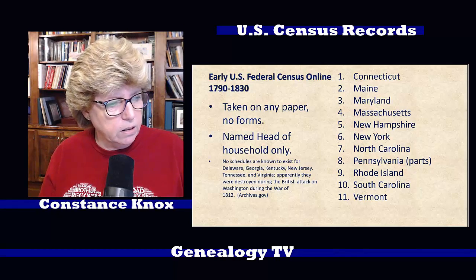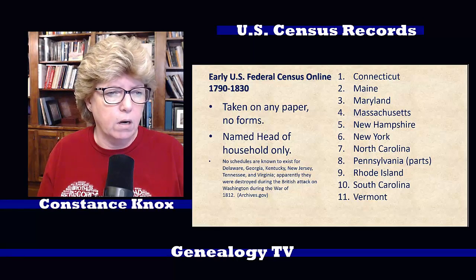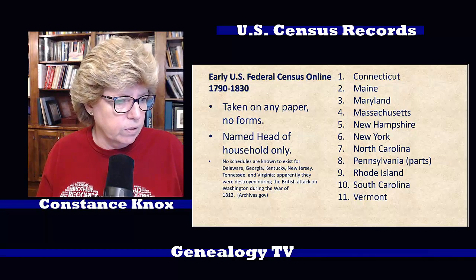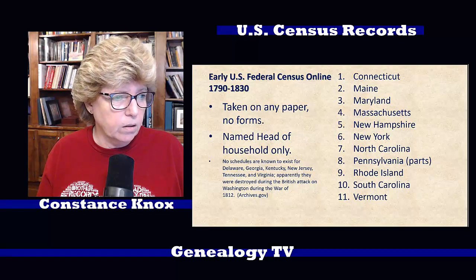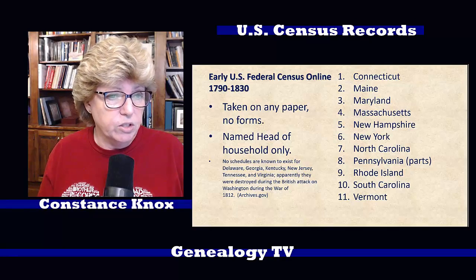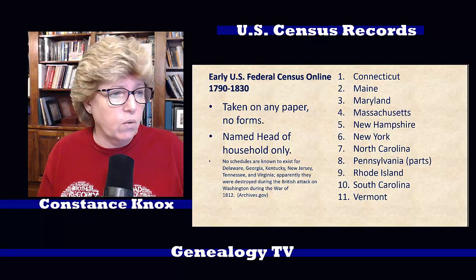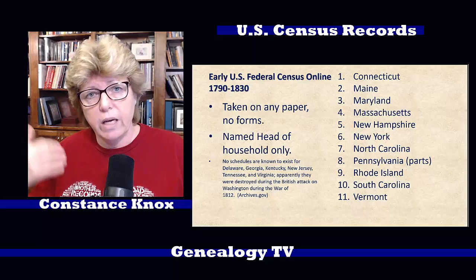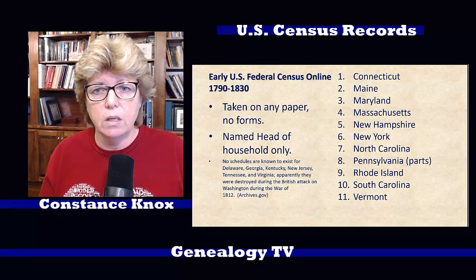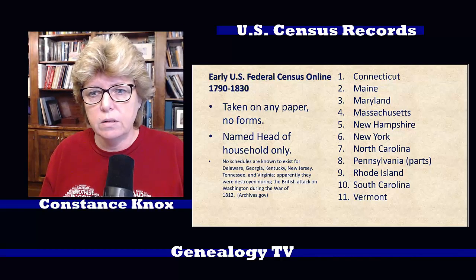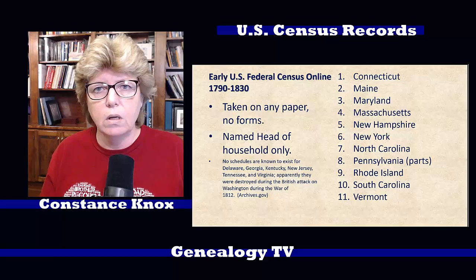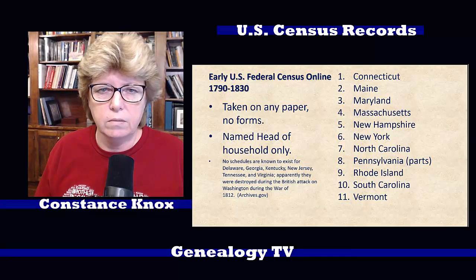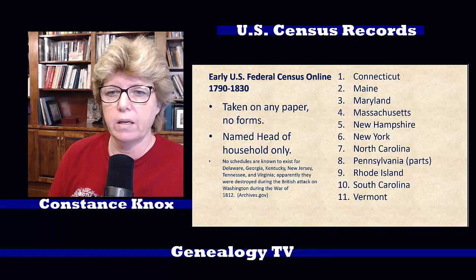I actually lifted that paragraph off of archives.gov, and I felt it was important to point out. Keep in mind that the very early census schedules were pretty much the eastern United States. As time goes on, more and more states become part of the Union — California wasn't a state until around 1850, so you wouldn't find an 1800 census schedule for California, for example.